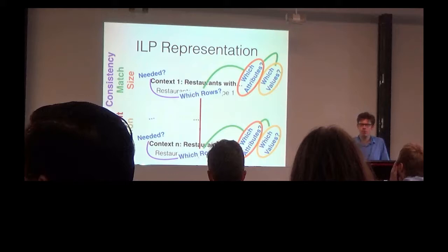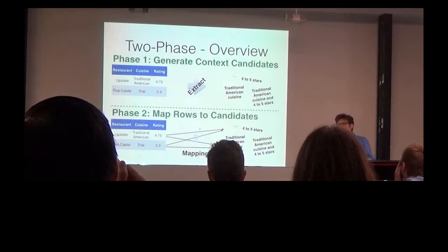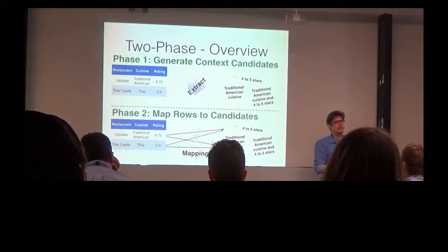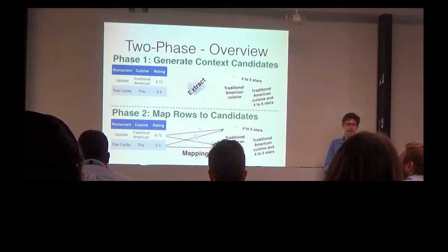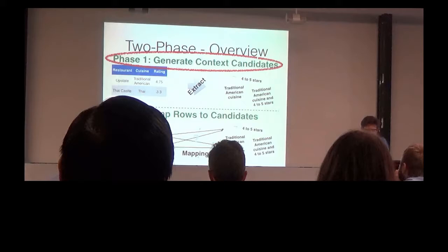Now, this gives me an optimal solution, but sometimes it is too slow to be used at runtime. This is why we come up with the two-phase algorithm, which decomposes the problem into easier to solve some problems. In the first phase, we generate promising context candidates, and then in the second phase, we figure out which subset of those candidates we need to use, and how we assign input rows to some of those candidates. The more interesting phase is the first one, but I won't go into detail here due to time restrictions. You can find all the details in the paper.